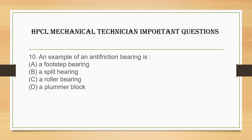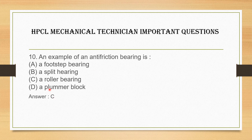Last question: which is an example of an anti-friction bearing? Options are: A. Footstep bearing, B. Split bearing, C. Roller bearing, D. Plumber block. Among all these bearings, the answer is C — roller bearing. A roller bearing is called an anti-friction bearing.